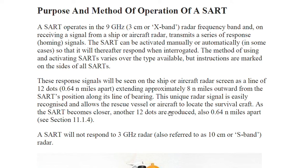These response signals will be seen on the ship or aircraft radar screen as a line of 12 dots, 0.64 nautical miles apart, extending approximately 8 nautical miles outward from the SART's position along its line of bearing. This unique radar signal is easily recognized and allows the rescue vessel or aircraft to locate the survivor craft. Another 12 dots are also produced, 0.64 nautical miles apart.